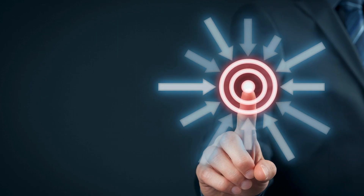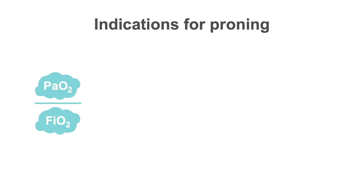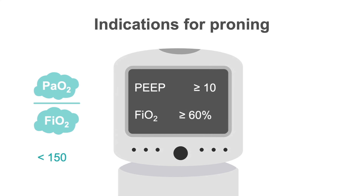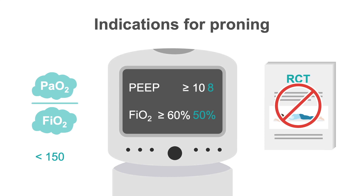To better understand the trigger for placing a patient prone, let's examine the PROSEVA criteria for randomization. In order to make it into the study, patients needed to have a P-to-F ratio less than 150 on the following settings: a PEEP of 10 or greater and an FiO2 of 60% or greater. If the P-to-F ratio was less than 150 but the patient was on lower ventilator settings, they were not included in the PROSEVA trial.